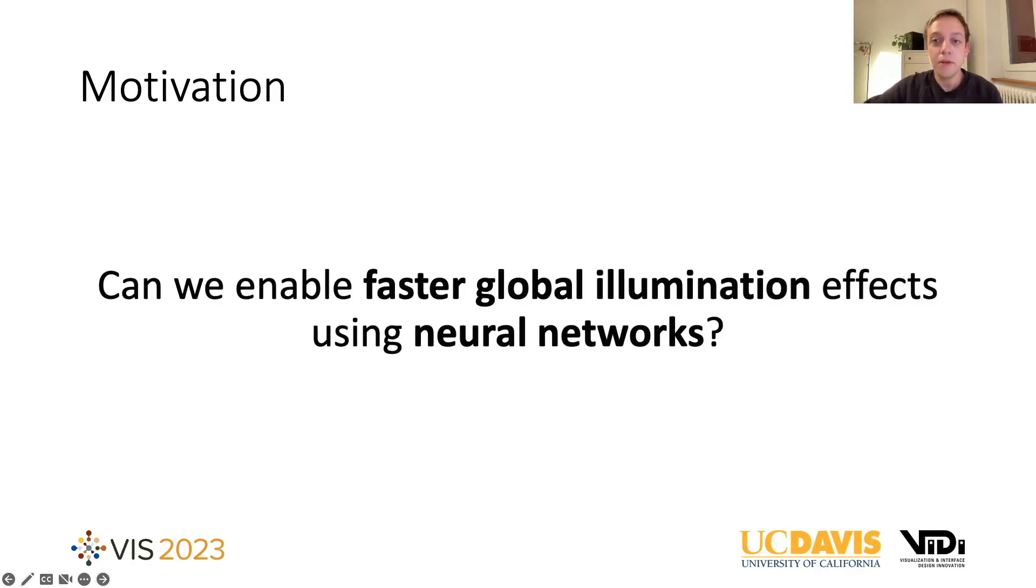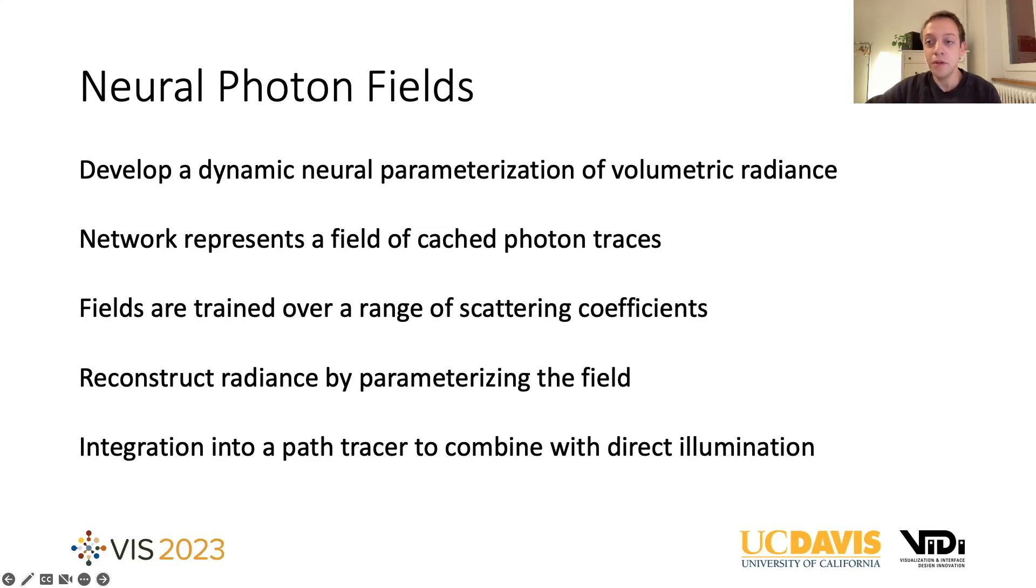So for this project, we develop photon field networks, which are a dynamic neural parametrization of volume radiance. A neural network, which we call a photon field, caches radiance that we compute from photon traces. And we do this for photon traces computed with different scattering coefficients to capture a range of non-isotropic scattering behavior. And we can then reconstruct that radiance by parametrizing and querying the photon field using sample positions, directions, and desired scattering coefficient.